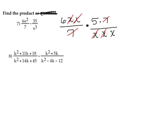Now that I've eliminated everything I can, I'm ready to multiply. In the numerator I have 6 times 5, which is 30. In the denominator, I lined out the 7, which leaves a factor of 1, so the only thing remaining is 1 times x, which is just x. So my answer for the first problem is simply 30 over x.